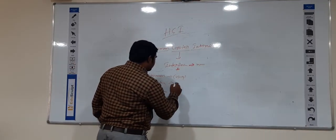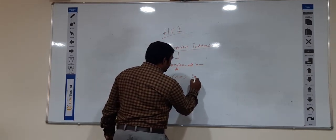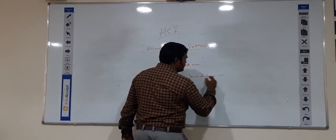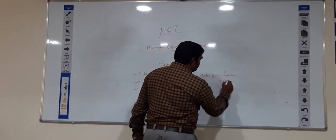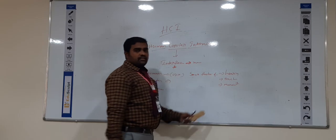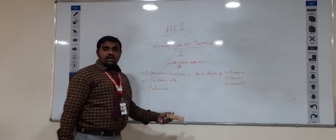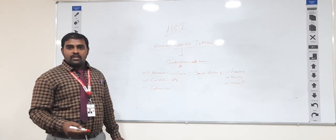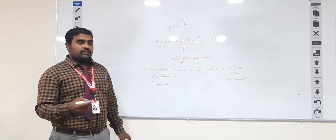What is human? Human is nothing but users. Users may be a single user or a group of users working together with the computer. Some characteristics of humans are: hearing, touching, and movement. These are some examples of the human factors.